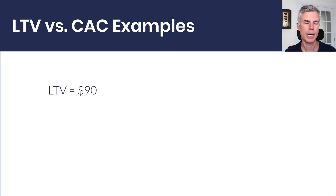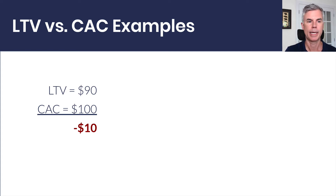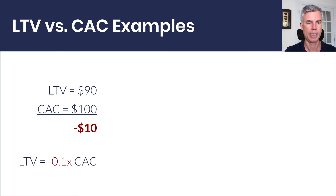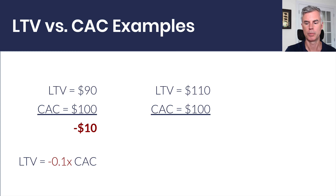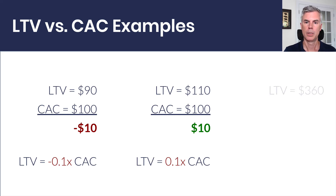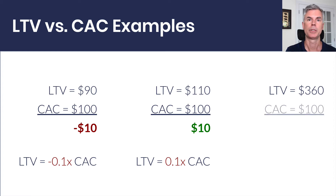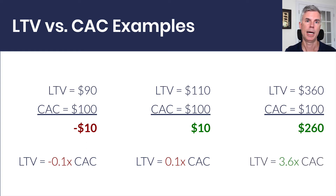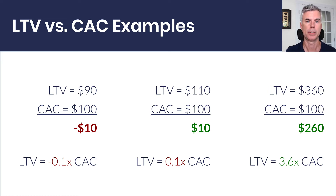If our lifetime value is $90 and our cost to acquire a customer is $100, that's not going to work — we're losing $10 on every customer, giving us a negative LTV to CAC ratio. Adding $20 more to the lifetime — we do make money per customer, but it's not much. In the third example, we make $360 over the lifetime of the customer while spending $100 to acquire them. In this case, we're past that 3x ratio — it costs $100 to acquire the customer but we make back all of that plus more.